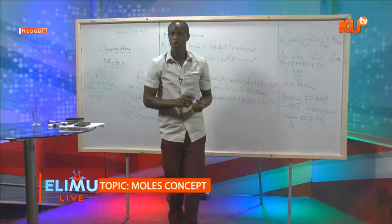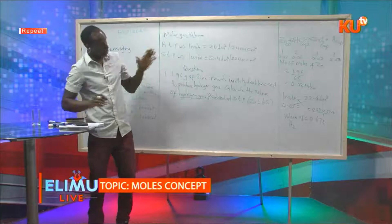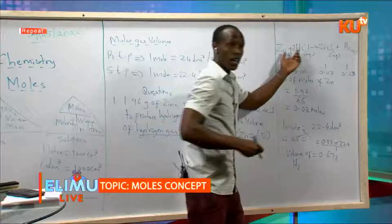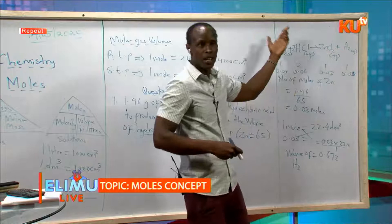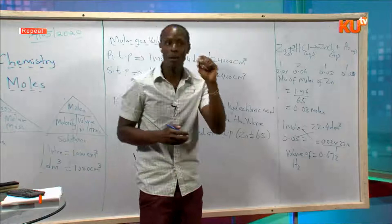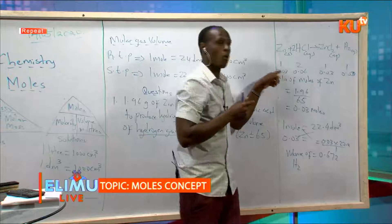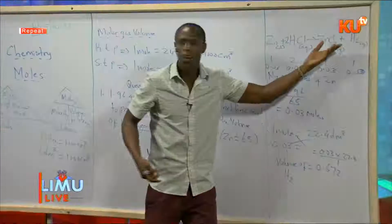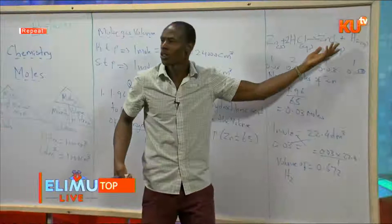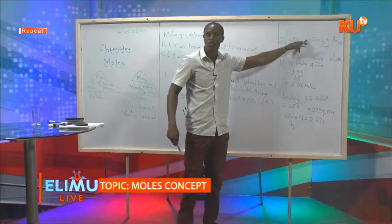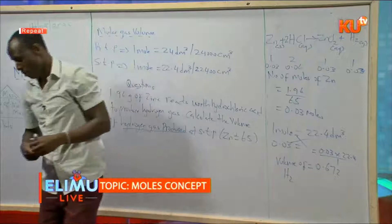To summarize the approach: first, write a balanced chemical equation; second, identify which compound you have enough data to calculate moles for; third, use the mole ratio from the balanced equation to find moles of other compounds; fourth, apply the appropriate triangle formula to get the required quantity — mass, volume, or molarity.